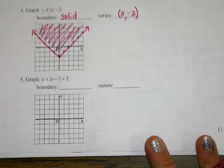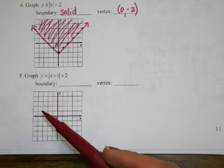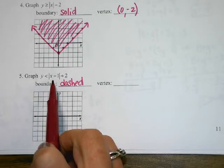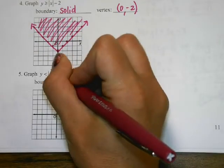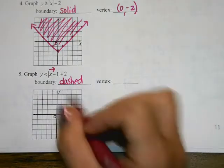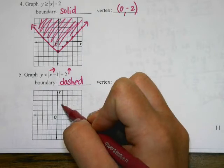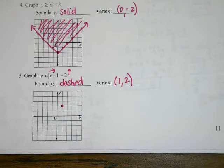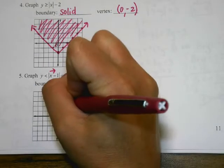Let's do one more — number five. Solid or dashed? Dashed. I have an absolute value with a negative one inside — which way is it going to go? It's going to move to the right one. And then the 2 outside the absolute value is going to move it up. So I start at the origin, go right 1 and up 2 — my new vertex is at 1, 2. There's no number out front, so my slope is 1. Remember, this guy is dashed.